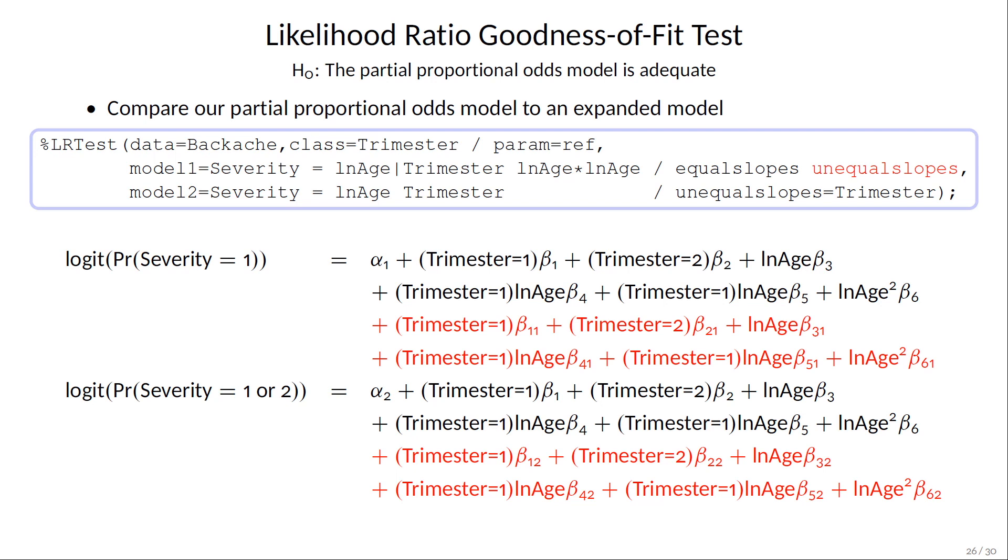These are the response functions for the expanded model. The equal slopes terms are in black and have the same parameters in both functions. The covariates are repeated as unequal slope terms in red, with different parameters in the different functions. Essentially, the equal slope terms are fitting a global mean while the unequal slope terms are deviations from that mean.